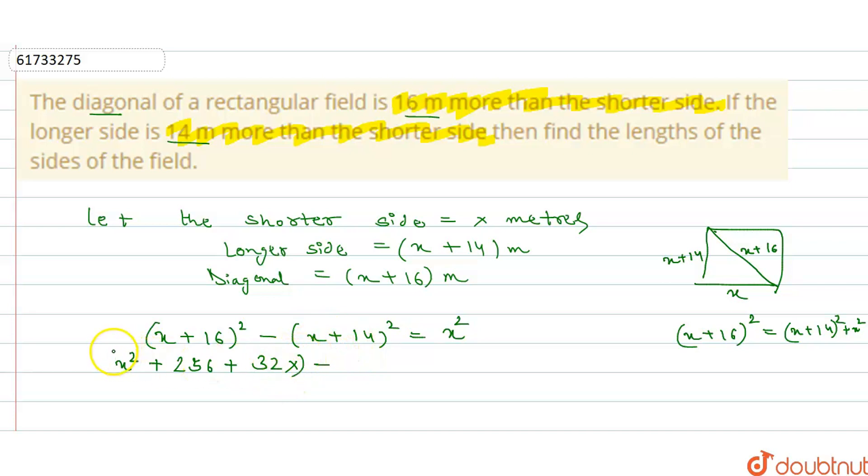Minus this square, first we use brackets, brackets open so here we can put x square plus 14 square 196 plus 2ab, 2 into 14 equals to 28, so here we can put 28x is equals to x square. So here we can put brackets open.